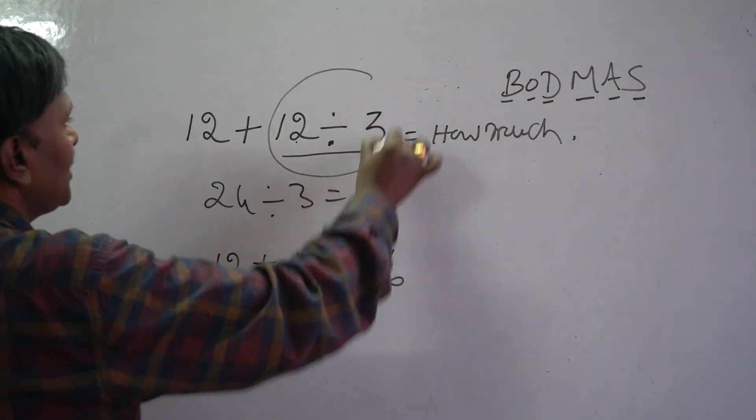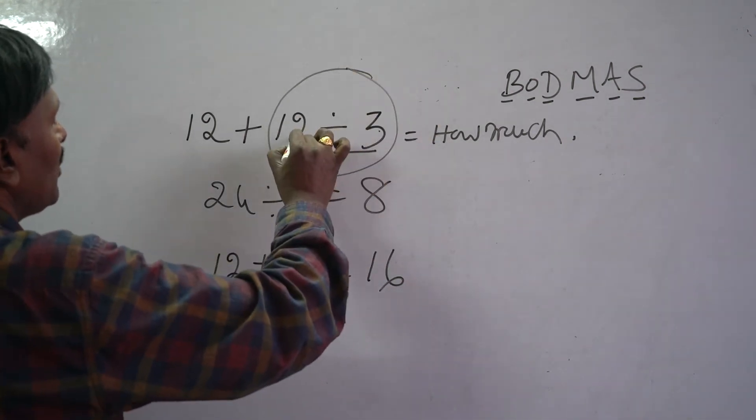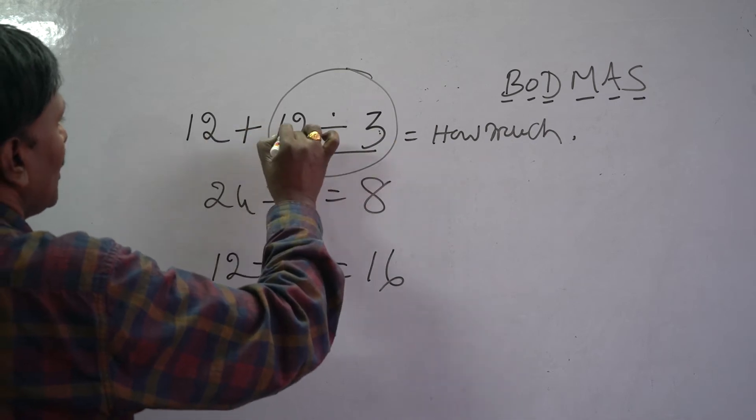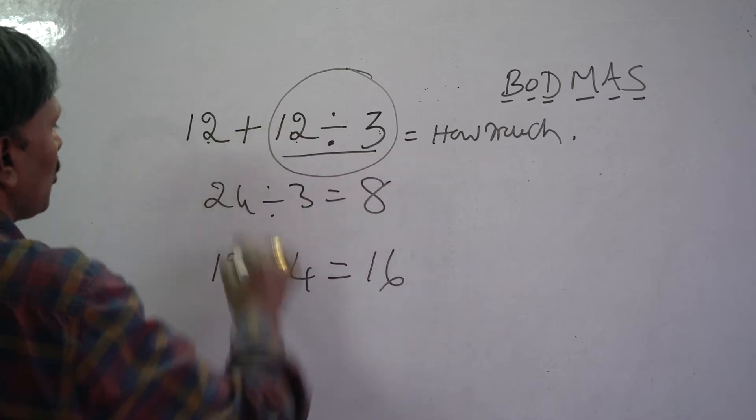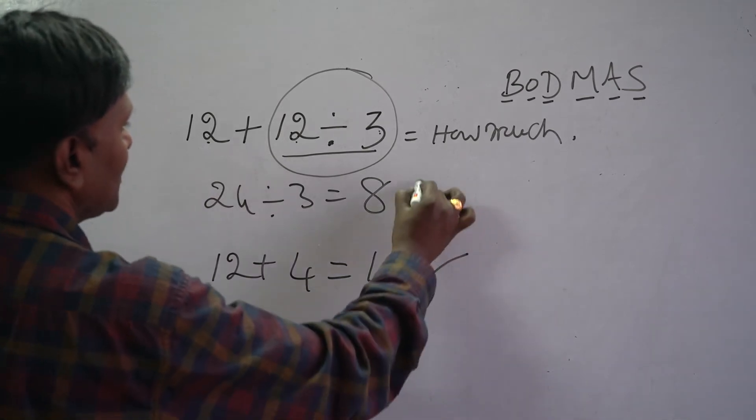Here we have to do this one. 3, 4. How much? 12. 12 plus 4. 12. So, 12 plus 4, this is correct.